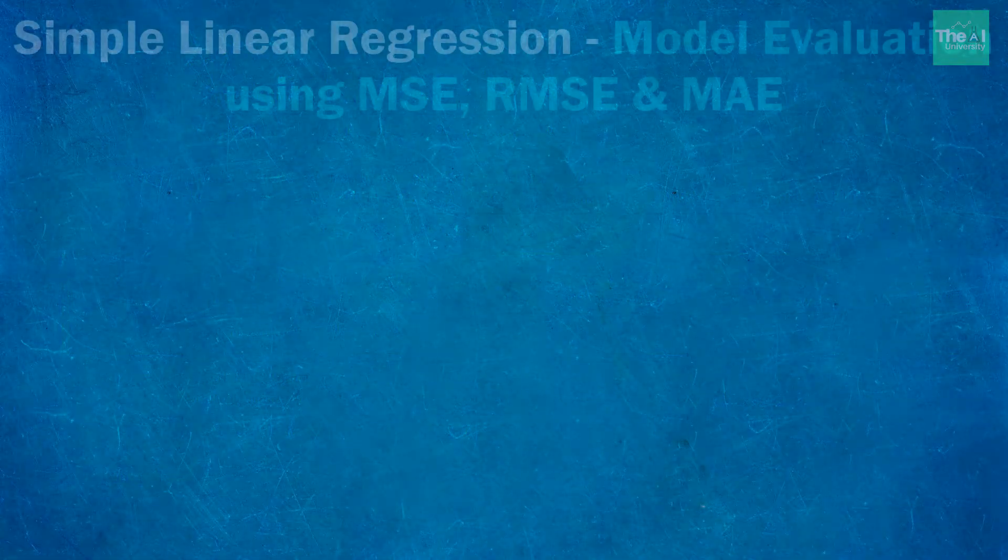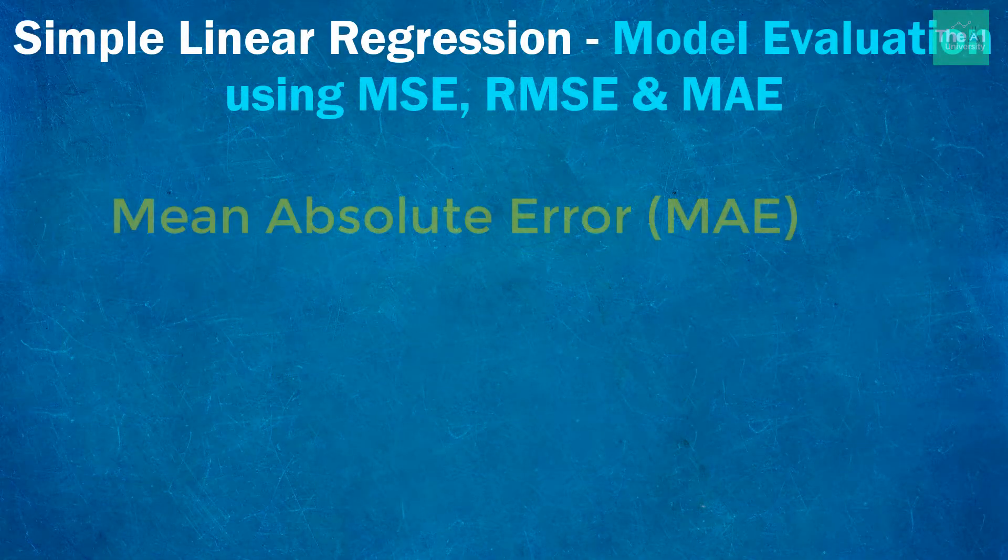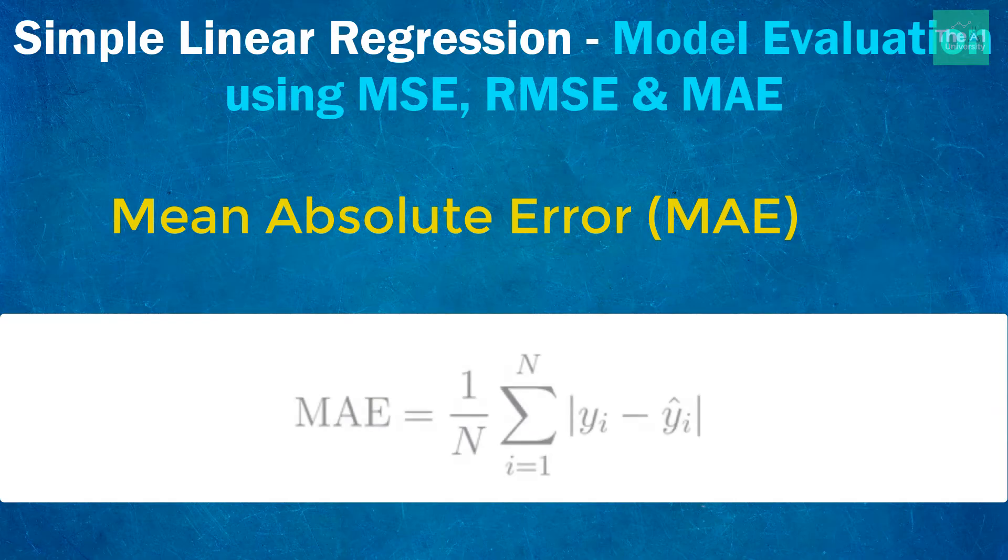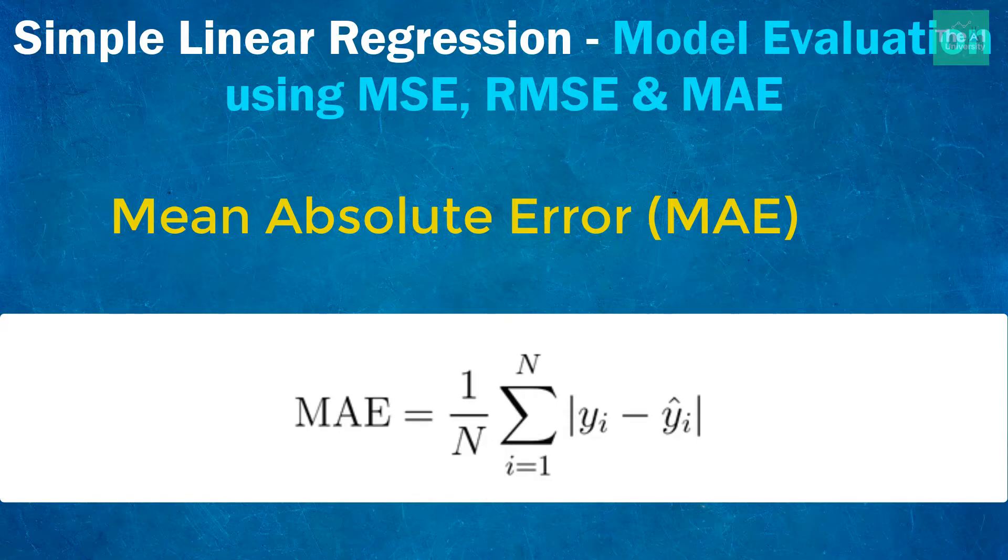So moving on to the next metric, which is mean absolute error or MAE. Here we calculate the error as an average of absolute difference between the actual value and the predicted values. The MAE or mean absolute error is a linear score, which means that all the individual differences are weighted equally in the average.